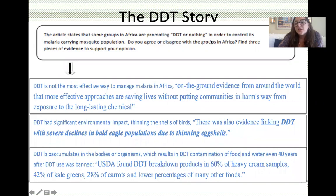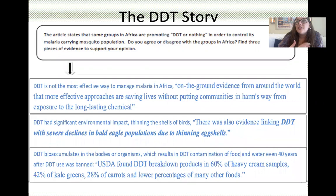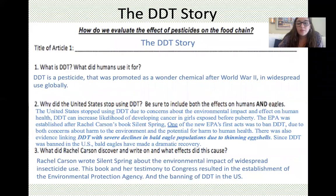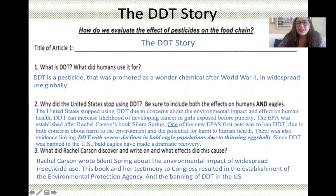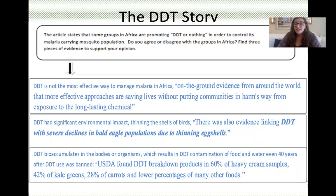The article states that some groups in Africa are promoting DDT or nothing. DDT is a highly effective pesticide against mosquitoes; however, it is resistant to destruction and as a result stays in the environment when it's sprayed. There is a massive amount of DDT still found in products like heavy cream and milk produced in the United States, even though DDT was banned 40 years ago, because it's so persistent in the environment.